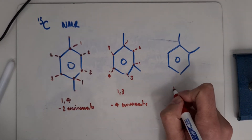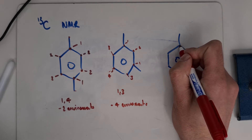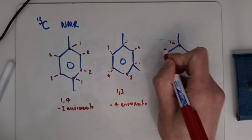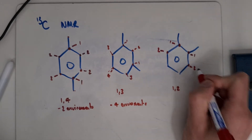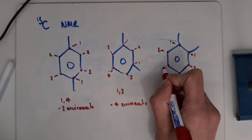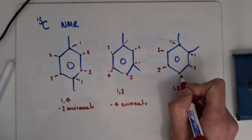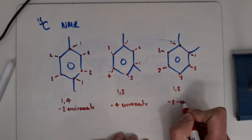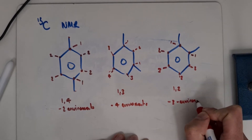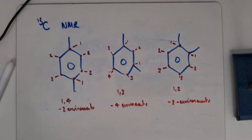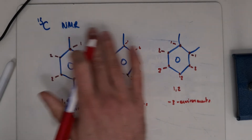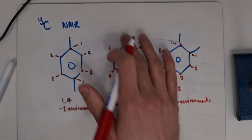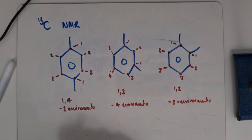In 1,2, we've got these two environments the same, these two environments the same, and these two environments the same as well. So in 1,2 we'll have three environments. Often you can look at the number of environments in carbon NMR to identify what type of bonding occurs around the benzene ring.